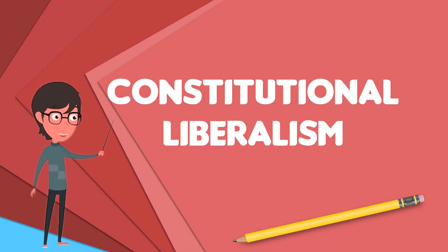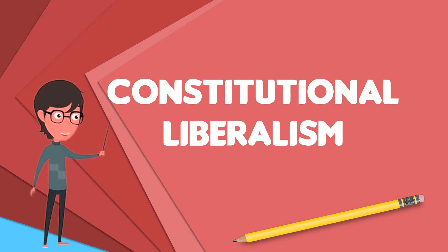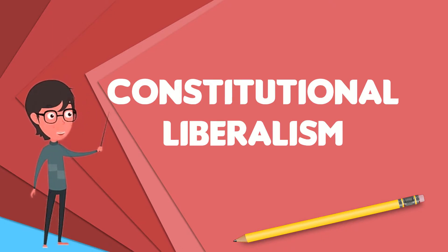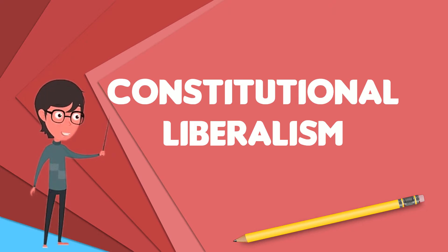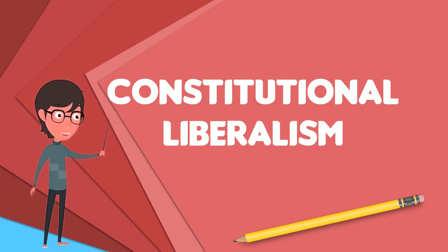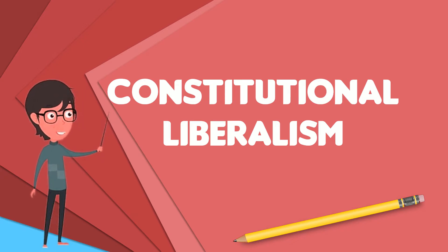Constitutional liberalism describes a form of government that upholds the principles of classical liberalism and the rule of law. It differs from liberal democracy in that it is not about the method of selecting government. The journalist and scholar Fareed Zakaria explains that constitutional liberalism is about government's goals.